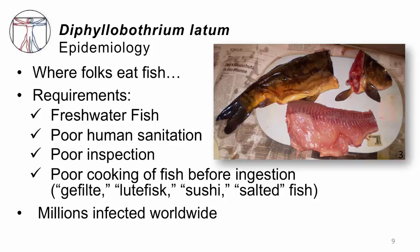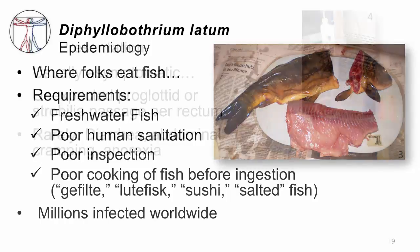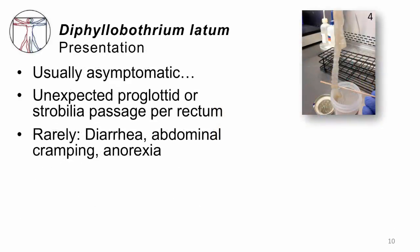Millions of people are infected worldwide — this is a common issue. Most people with Diphyllobothrium latum have no symptoms whatsoever. Once in a while, someone will pass an entire proglottid or a segment of the strobilia per rectum. If you look in the toilet and see one of these long chains, that will usually get your attention — that's when people will bring you the worm. Sometimes you'll have to make the diagnosis because they'll have a vague syndrome of diarrhea, belly cramping, or maybe anorexia.